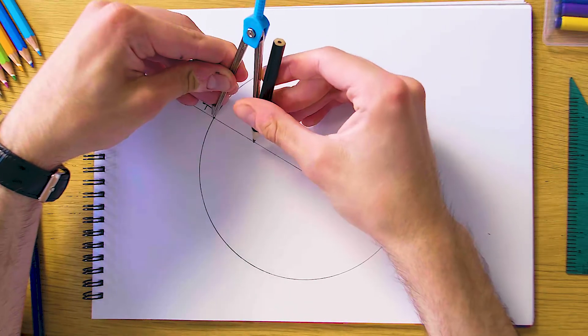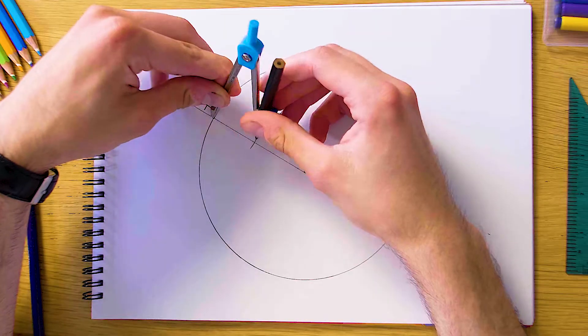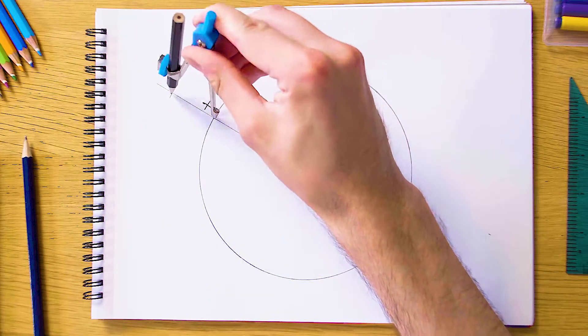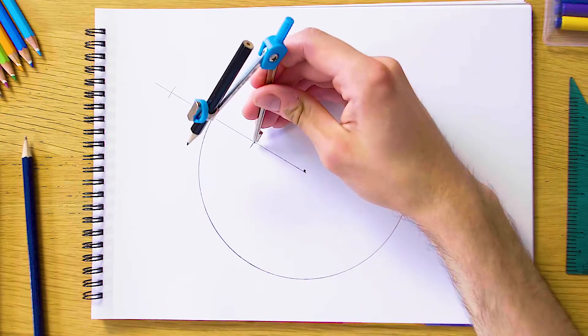we're going to take our compass and swing some distance out from X on the line we've just drawn, so using our compass on both sides like this. And then we're going to take the compass and just swing out